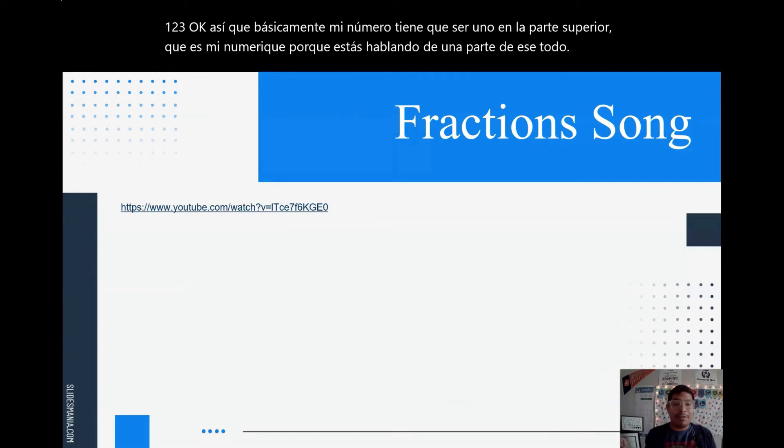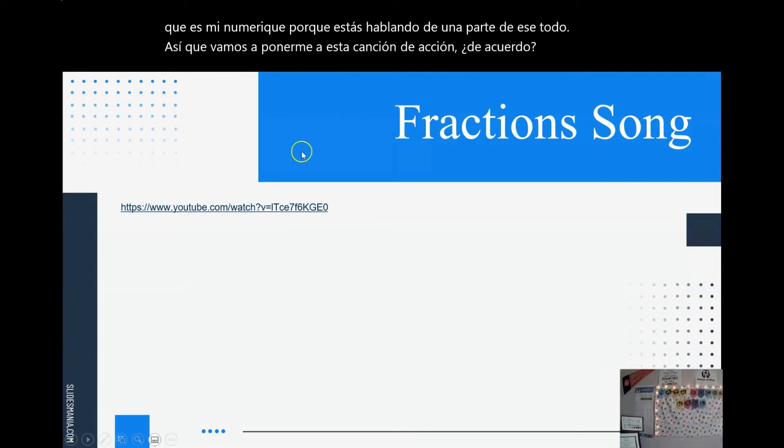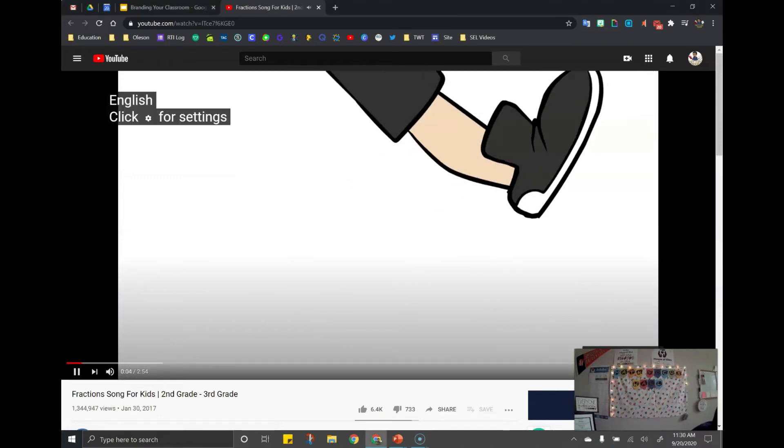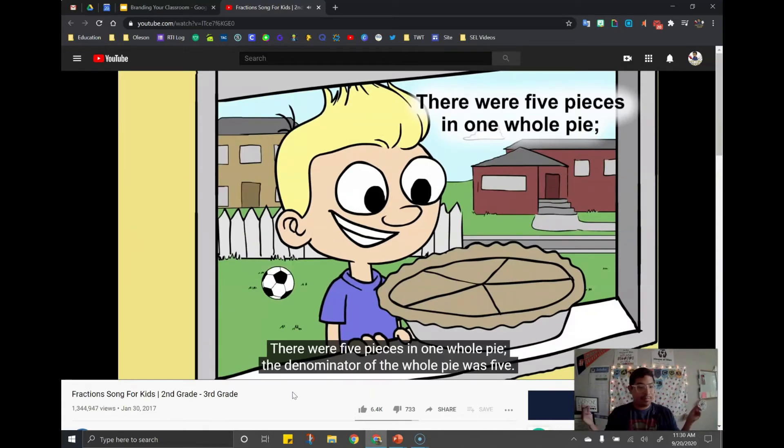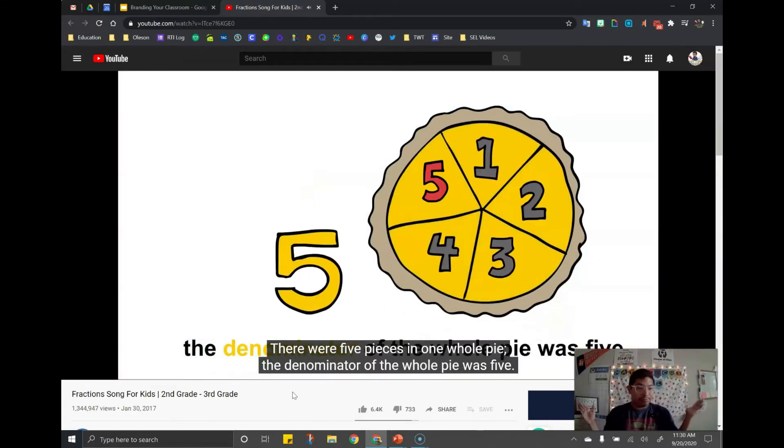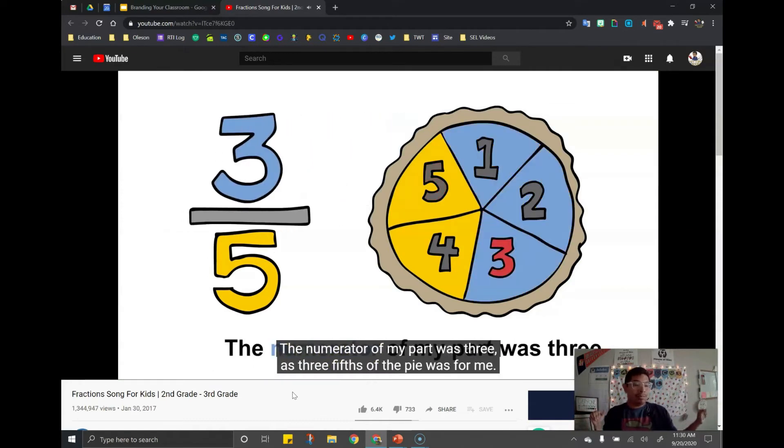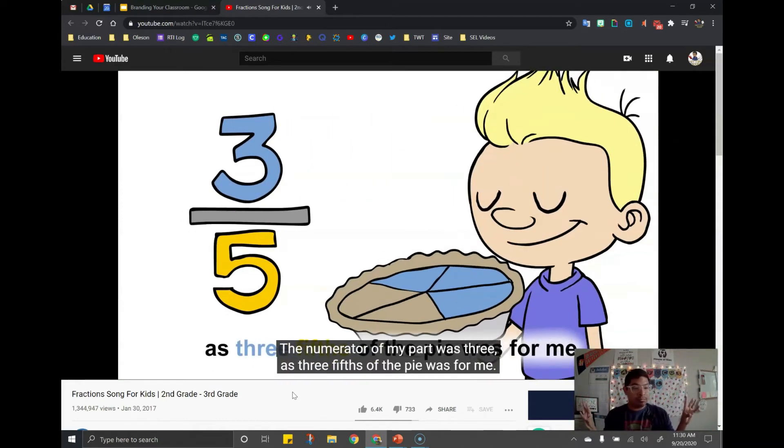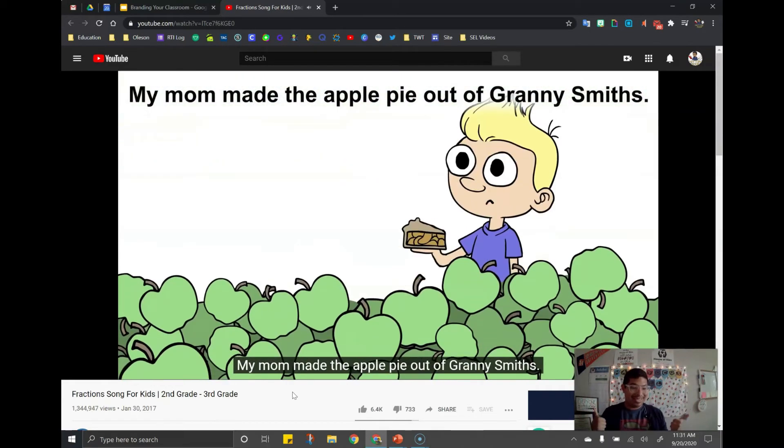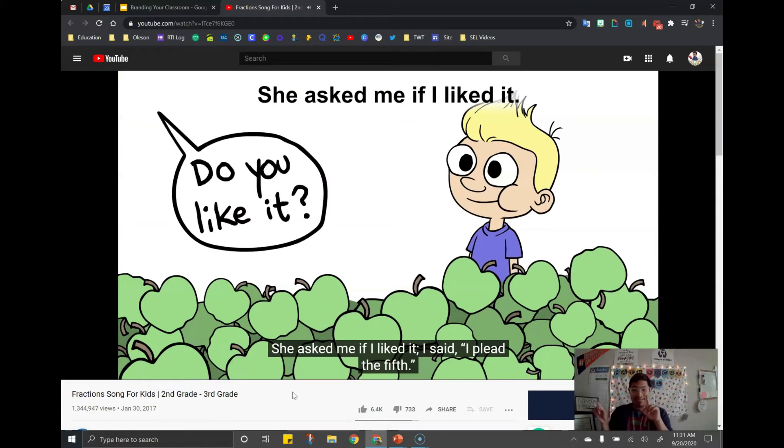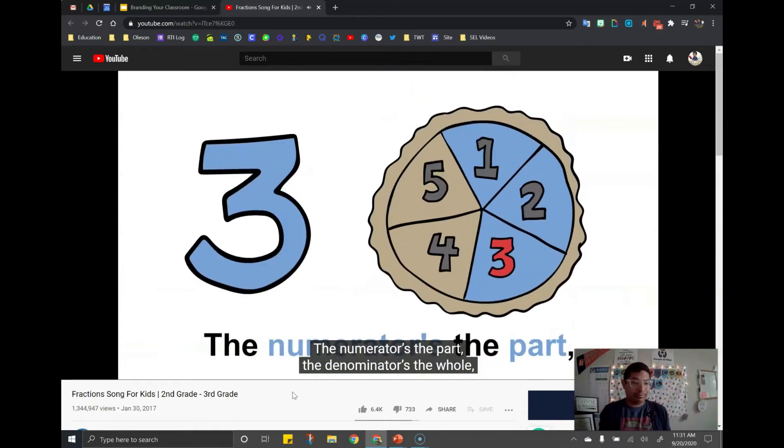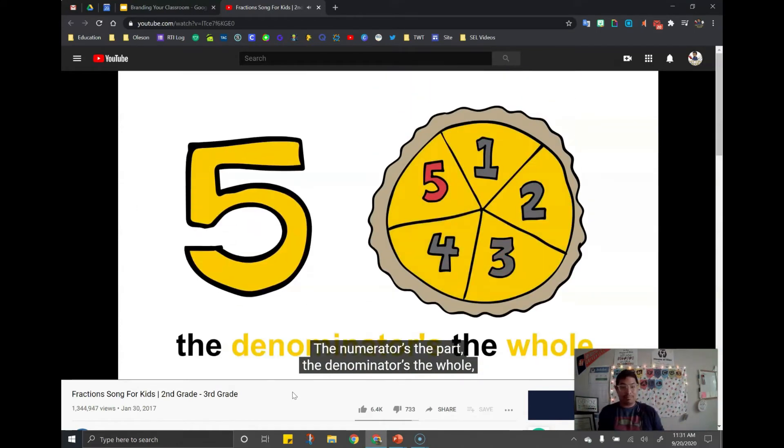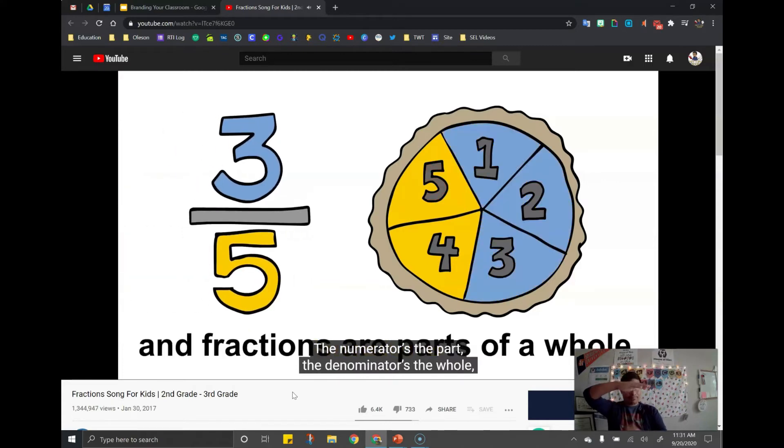All right, so let's get down to this fraction song. There were five pieces in one whole pie. The denominator of the whole pie was five. The numerator of my part was three, as three-fifths of the pie was for me. My mom made the apple pie out of Granny Smiths. She asked me if I liked it. I said, I plead the fifth. The numerator's the part. The denominator's the whole. The fractions are parts of a whole.